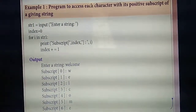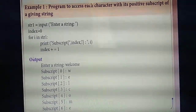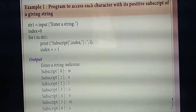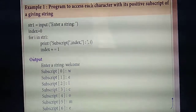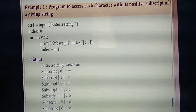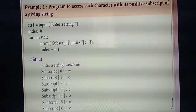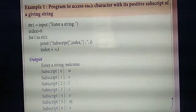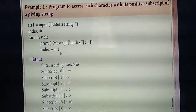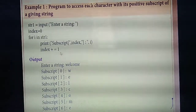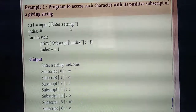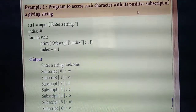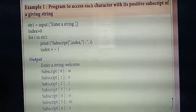See the output. You enter the string 'welcome'. With negative subscript, index starts from minus one and the output is printed in reverse order: first 'e', then 'm', 'o', 'c', 'l', 'e', 'w' — from minus one to minus seven. This is the difference between positive and negative subscript. These are very important programs — if you understand the concept, you can write them.